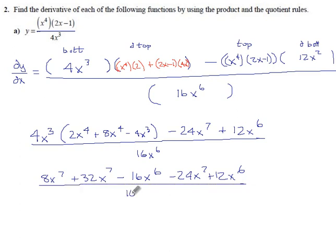Collect like terms. We have 8x to the 7s, 32 more makes 40x to the 7s, then we lose 24 of them, we're down to 16x to the 7s, minus 16x to the 6 plus 12x to the 6 makes minus 4x to the 6.